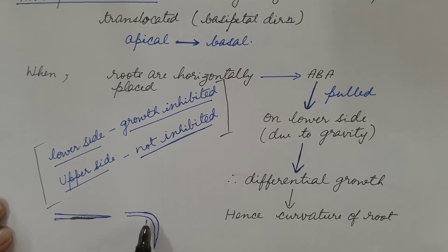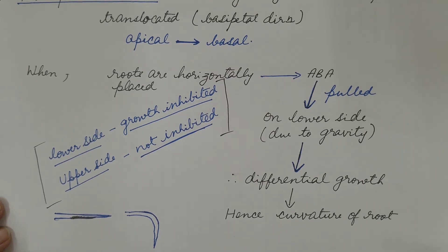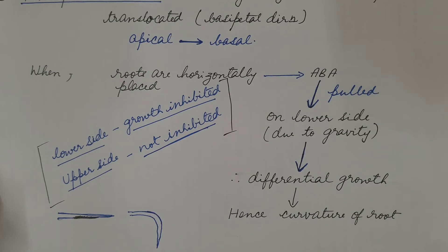As a result of which, differential growth of both sides takes place. Upper side there is more growth compared to the lower side, and this differential growth results in the curvature of the root. This is known as geotropism in roots, that is, movement of roots towards gravity.